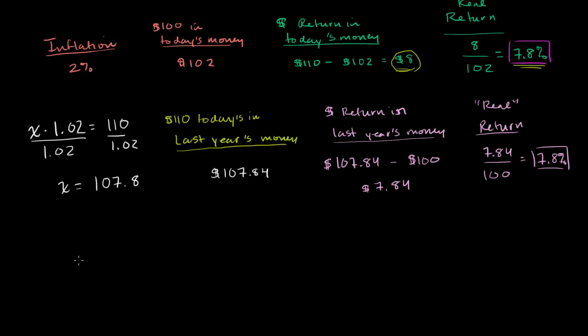So what we've been doing is, at least in the first video, we converted everything to today's dollars. So the actual dollar return in today's dollars is the amount that we got, or the net dollar return. And the net dollar return is the amount that we originally invested, compounded by the nominal interest rate.